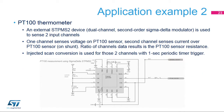Another example is a PT100 thermometer which uses an external STPMS2 Sigma-Delta modulator monitoring two channels. One channel senses the voltage and the second one senses the current on the PT100 sensor. Both channels are sampled using timer-triggered injected conversions in scan mode, and software then computes the PT100 resistance from collected data and finally the temperature.